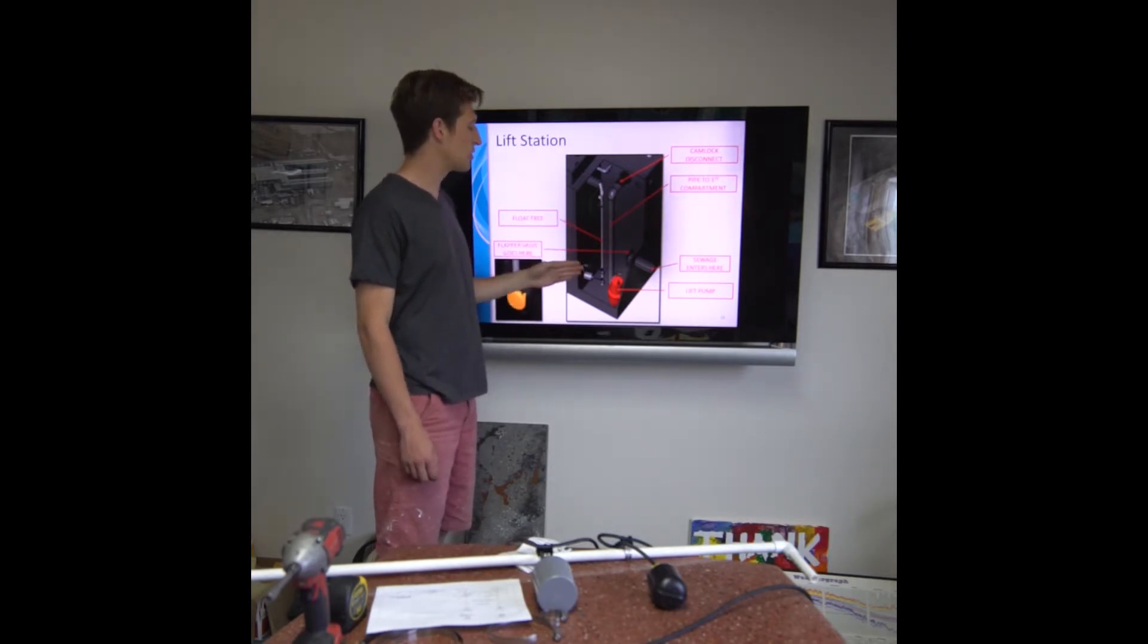Secondly, we have our float tree here on the left. That can just be snapped out of the small saddle key on the side here and pulled out of the system as well.